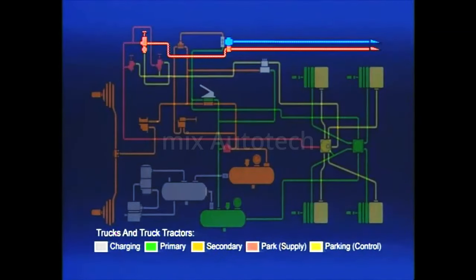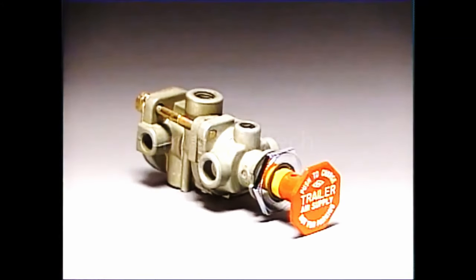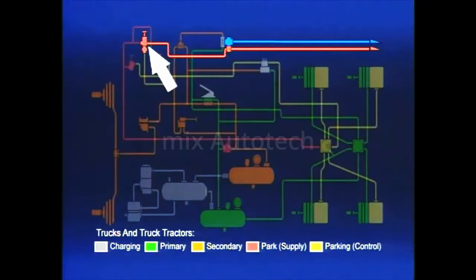The other half of the team, the PP7 Trailer Supply Valve, is mounted on the vehicle dash and is easily distinguished by its red octagonal control button. The PP7 controls the flow of supply air to the TP3 and subsequently to the trailer. In addition, it synchronizes the tractor protection system with the tractor parking system. One button parking control is thus achieved.